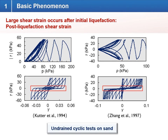Using laboratory element tests we can make more observations on this post-liquefaction shear deformation. Here I'm showing two typical undrained cyclic tests on sand, and as we can see there is a lot of shear strain accumulated after soil reaches initial liquefaction. So after the soil reaches zero effective stress, we see a lot of shear strain accumulation, and we call this post-liquefaction shear strain.